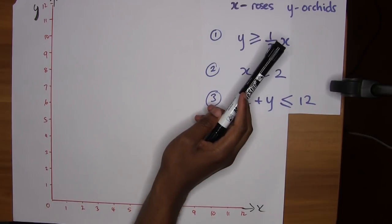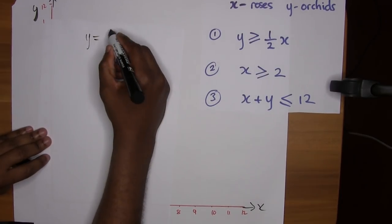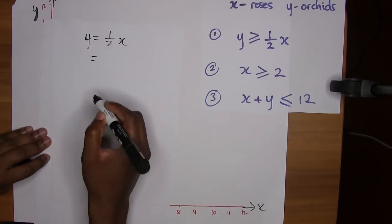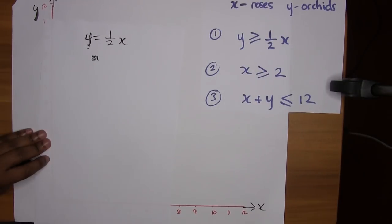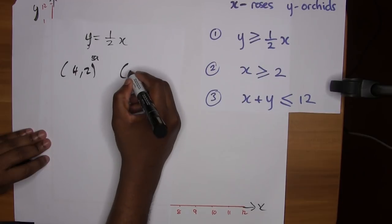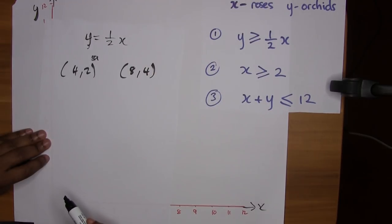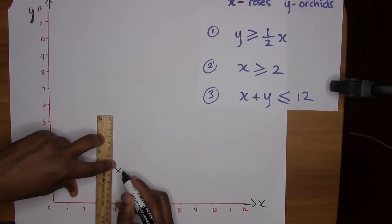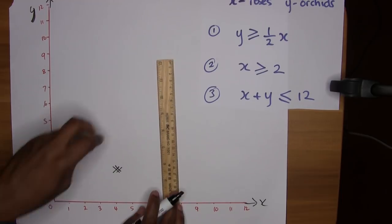For the first inequality, y is greater than or equal to a half x. That means we can consider the line as y equals a half x. This is the line y equals a half x. So for any value x, y is a half of that. I could try values like 4, 2 and maybe 8, 4, because y is always a half of x. You can actually plug it in and verify those values. So if I simply plot those points, 4, 2 and 8, 4.